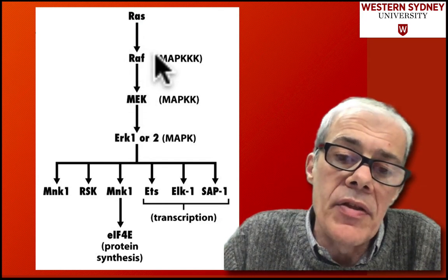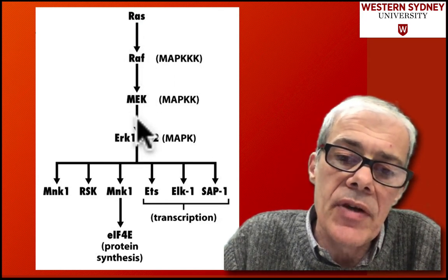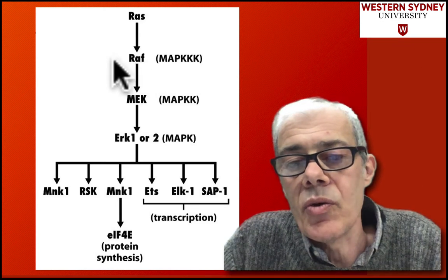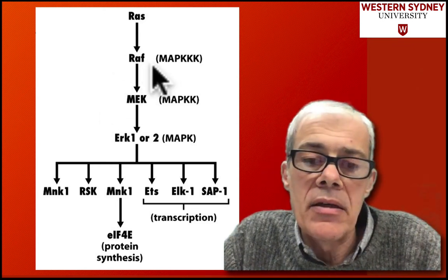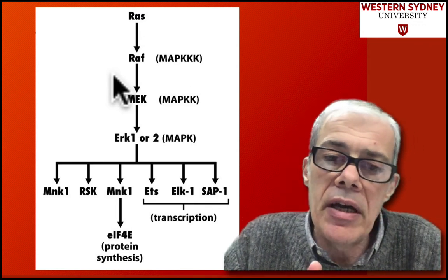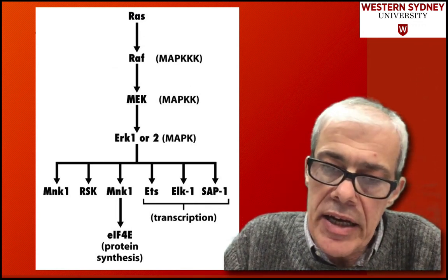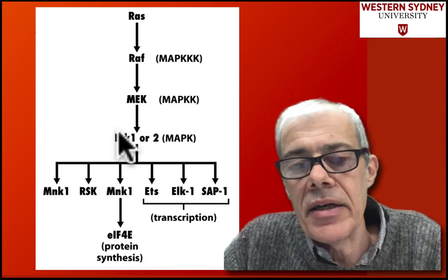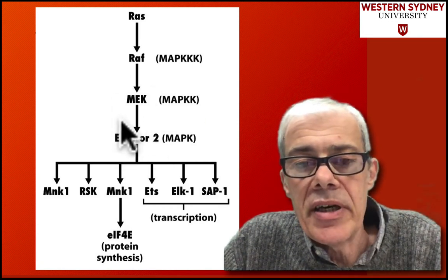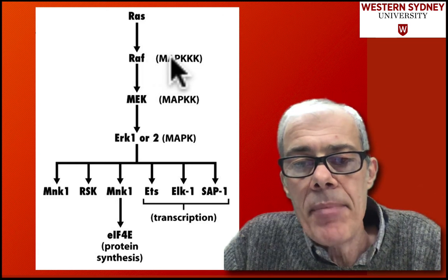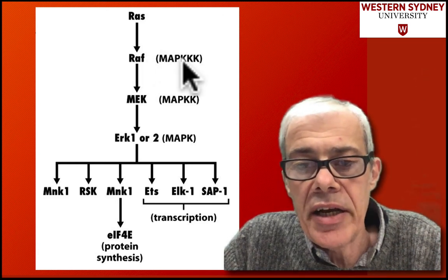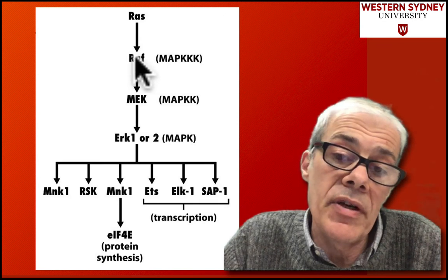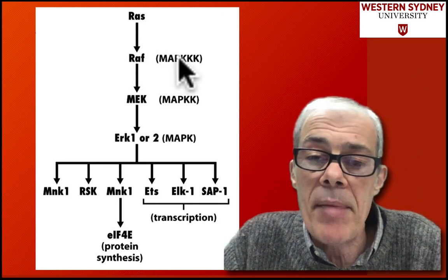This kind of pathway is highly conserved over eukaryotic cells — everything from yeast through human cells all have what's called the MAP kinase pathway. The MAP kinase pathway consists of three kinases that each activate the next. RAF is the first kinase, MEK is the second, and ERK is the third. RAF is referred to as MAPKKK — the top-level kinase.